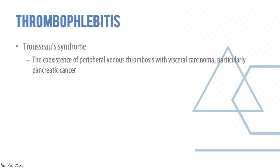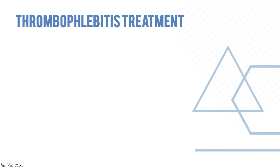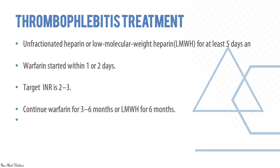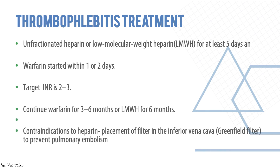Thrombophlebitis, also known as Trousseau syndrome, is the coexistence of peripheral venous thrombosis with a cancer — particularly pancreatic cancer, which is commonly tested. Treatment is unfractionated heparin or low molecular weight heparin for at least five days, then warfarin started within one to two days. Target INR is 2–3; continue warfarin for three to six months or low molecular weight heparin for six months. A contraindication to heparin warrants placement of a filter in the inferior vena cava to prevent pulmonary embolism.